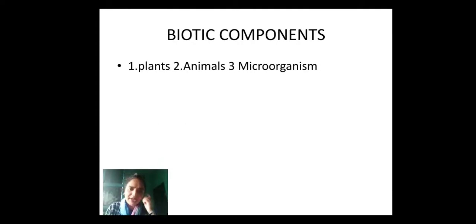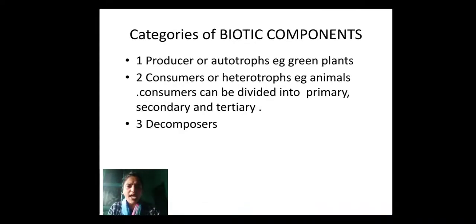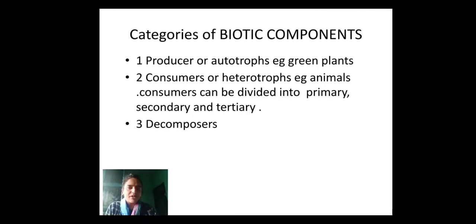Next, we have biotic components. Biotic components are the components which have life in them. For example, plants, animals, microorganisms — all these are biotic components. There are three categories of biotic components: producers, consumers, and decomposers.